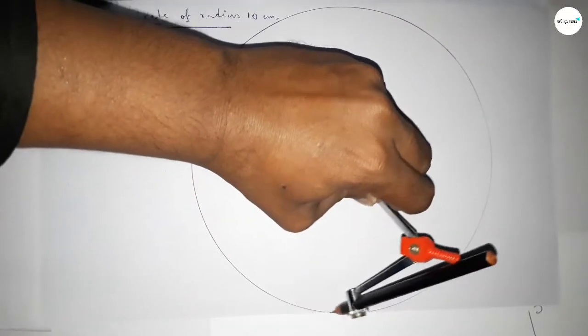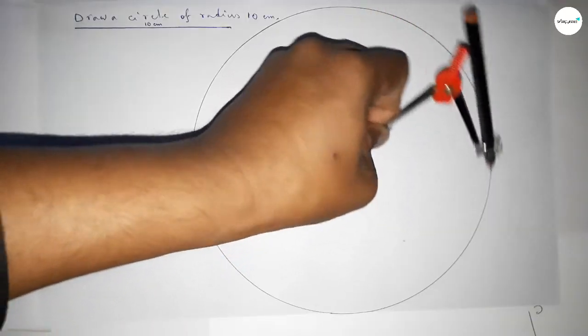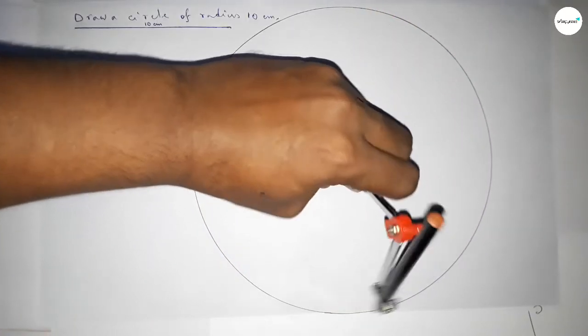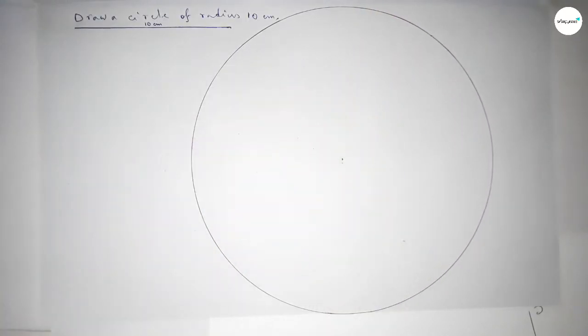This represents a circle of radius 10 centimeters and this is a perfect picture.